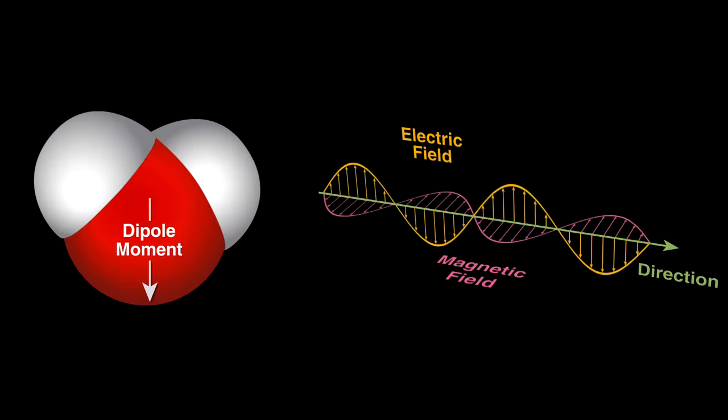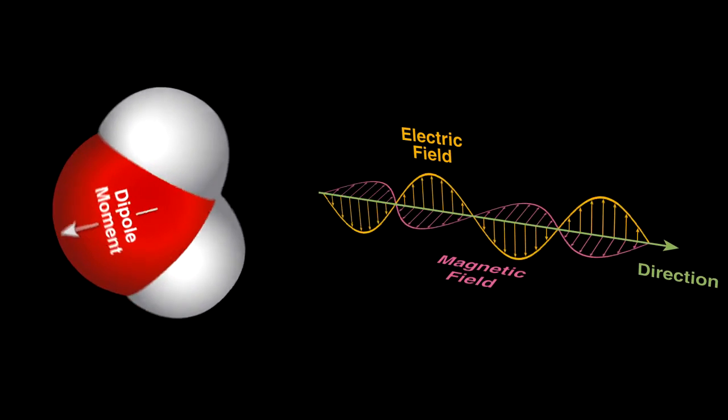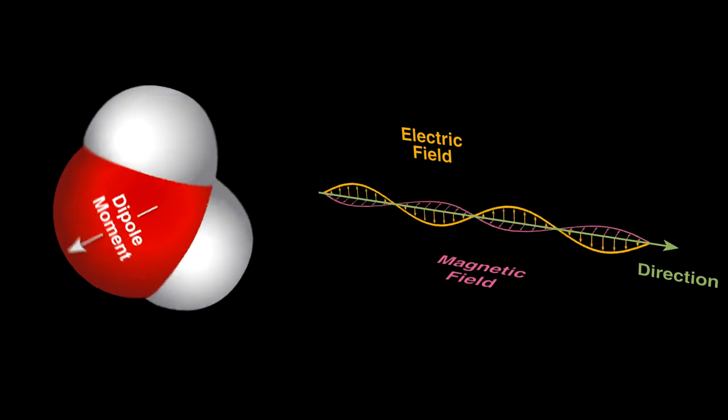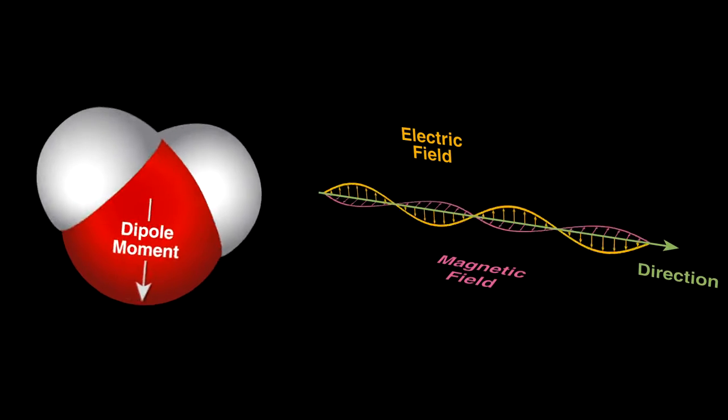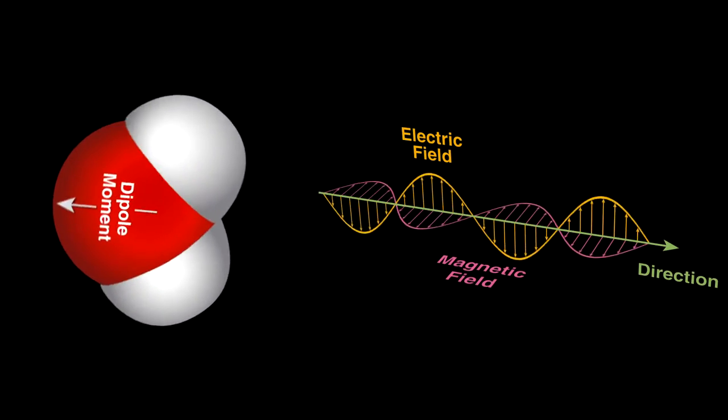Water will try to align with the radiation's electric field. The changing field rocks the water molecules back and forth rapidly, and molecular friction from this creates heat as the motion disrupts the hydrogen bonds between neighboring water molecules.